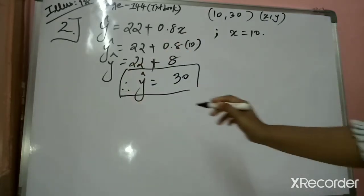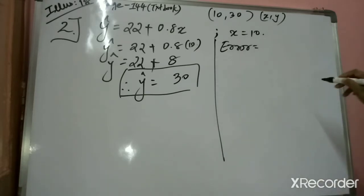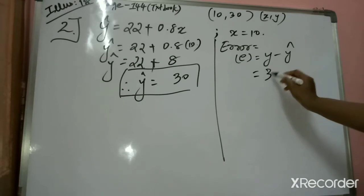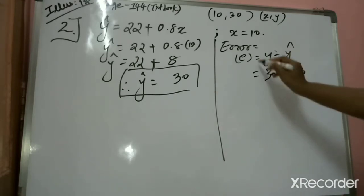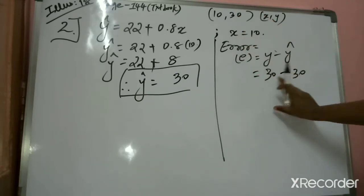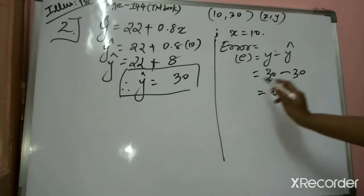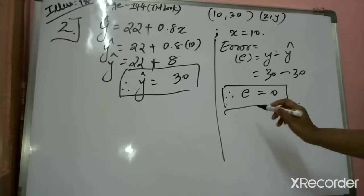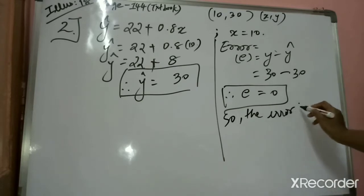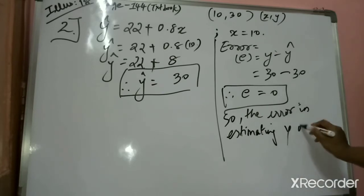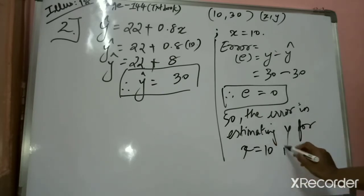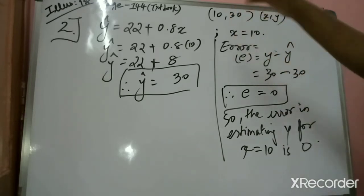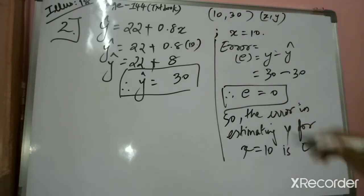Now find the error. The error formula is E equals Y minus Y cap. Your observed Y is 30 and Y cap is also 30. So E equals 30 minus 30, which equals 0. The error in estimating Y for X equals 10 is 0. Since the value of the error is 0, we can say that the point (10, 30) lies on the fitted line Y cap equals 22 plus 0.8X.